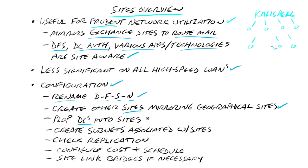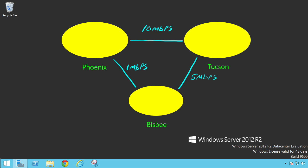Then you place your domain controllers into the sites you've created. You right-click and choose Move to move those domain controllers into a more appropriate site. Then you create subnets associated with those sites. For example, Phoenix might be the 10.10.10.0/24 network and Tucson is 10.10.11.0/24.